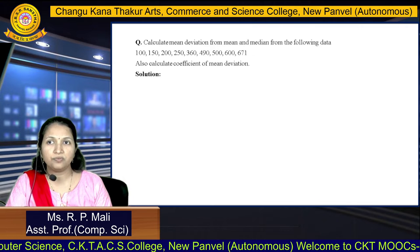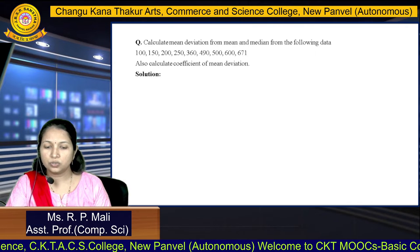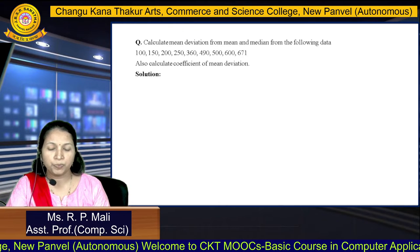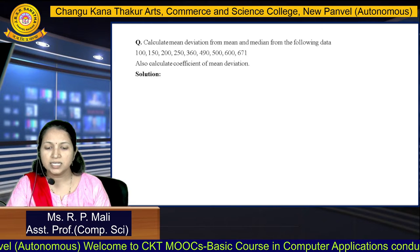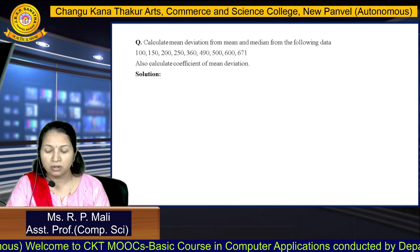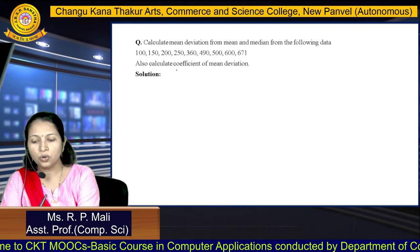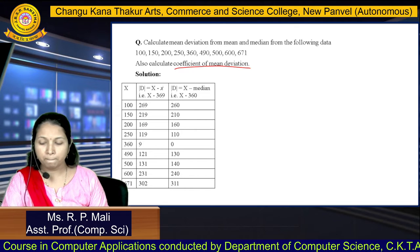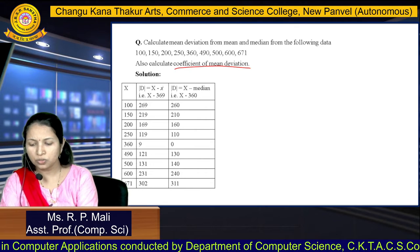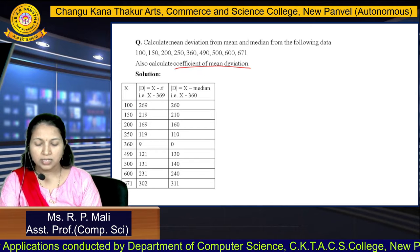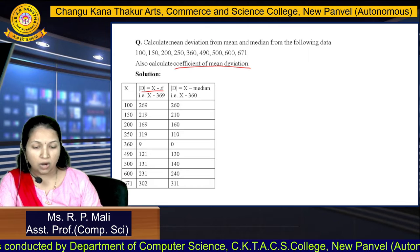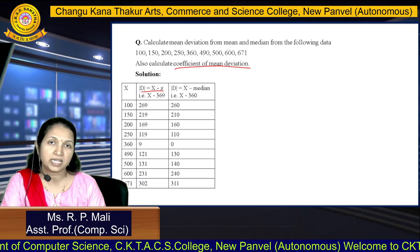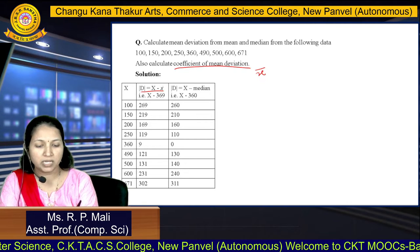Here is one example for the individual series. The data given is: 100, 150, 200, 256, 360, 490, 500, 600, and 761 — this is individual or raw data. We are going to calculate the coefficient of mean deviation. First, we plot a table and write all the values of x, then find the deviation x minus x̄. To do that, we first need to find x̄, which is the mean.